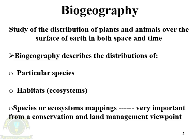Biogeography is further subdivided into zoogeography and phytogeography. In zoogeography we discuss the distribution of animals, while in phytogeography we discuss the distribution of plants over the surface of the earth, both in space and time. Biogeography describes the distribution of particular species in different areas, and also discusses different habitats or ecosystems present in different localities.